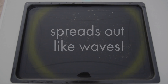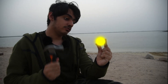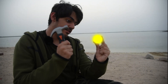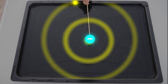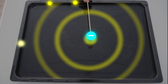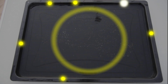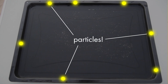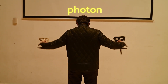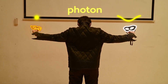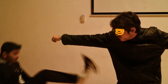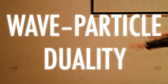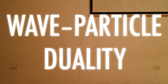it spreads out just like a wave. But when the photon interacts with anything, all of that photon's energy gets delivered randomly at single points, like particles. In other words, the photon wears two masks: it travels like a wave, and it interacts like a particle. That's called the wave-particle duality.